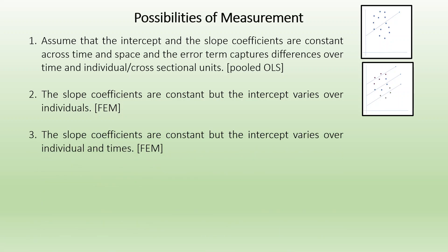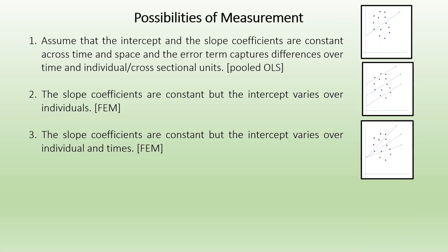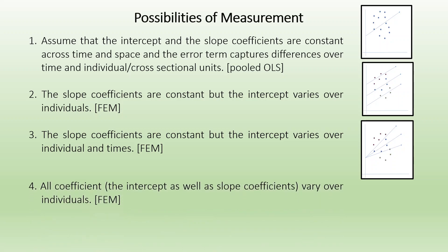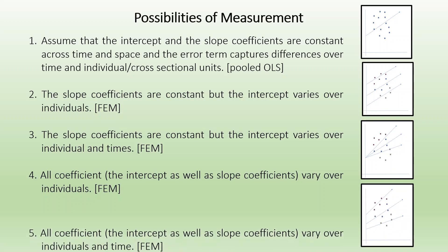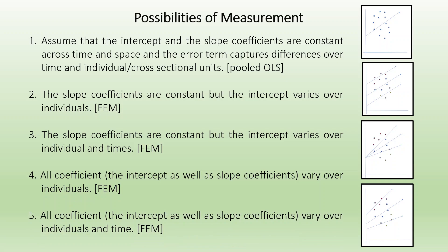The fourth case is where the slope coefficients are constant but the intercept varies over individual and time. Fifth, all coefficients — that is the intercept as well as slope coefficients — vary over individuals. The last category is where all coefficients, both the intercept and slope coefficients, vary over individuals and time.